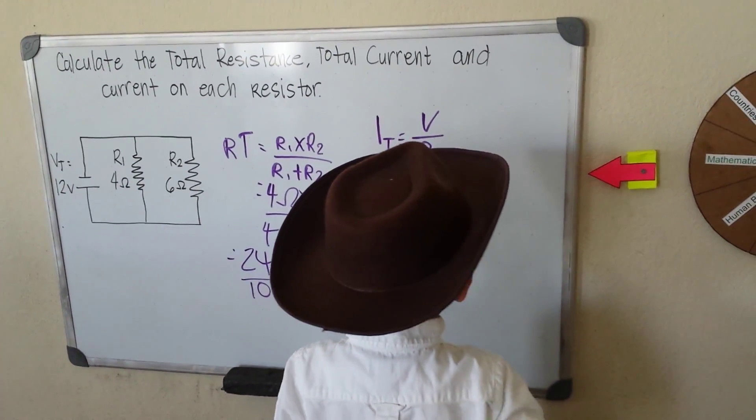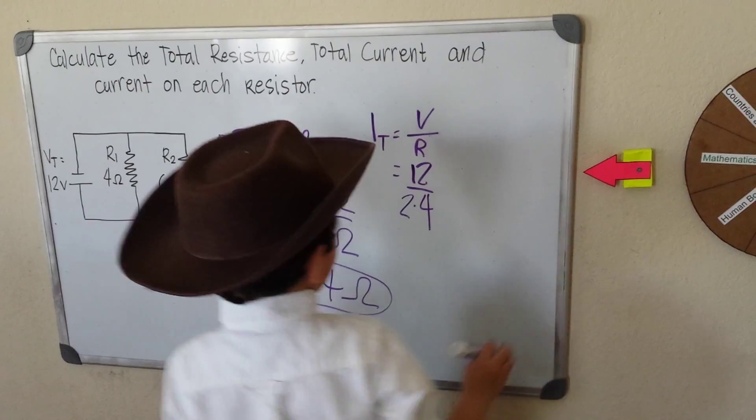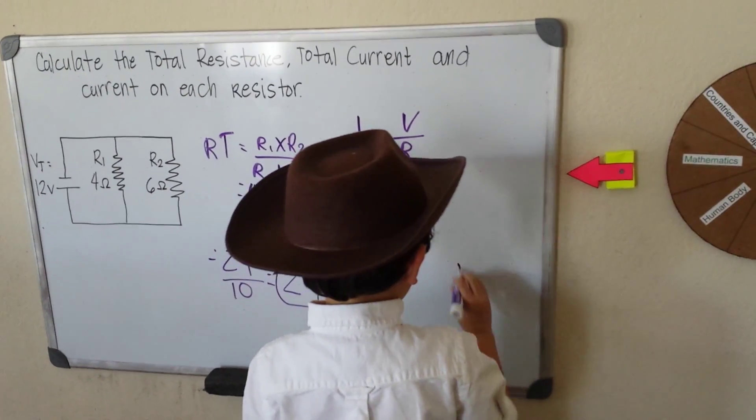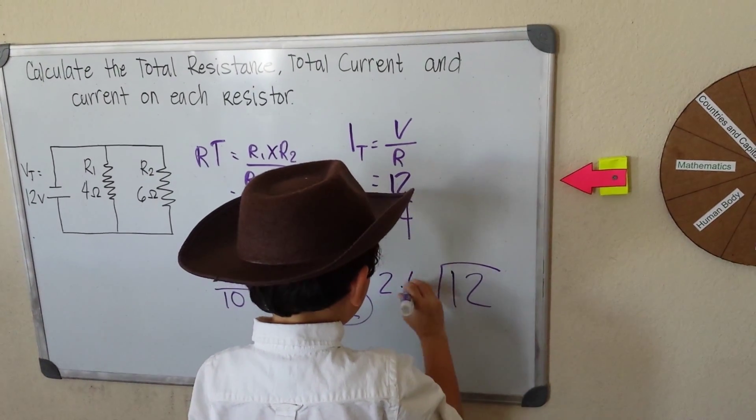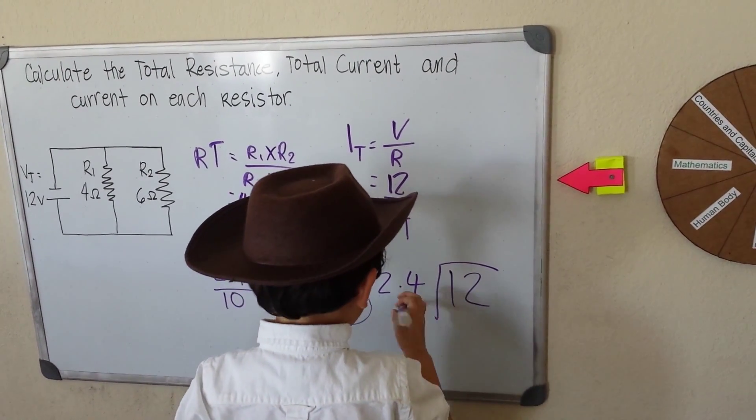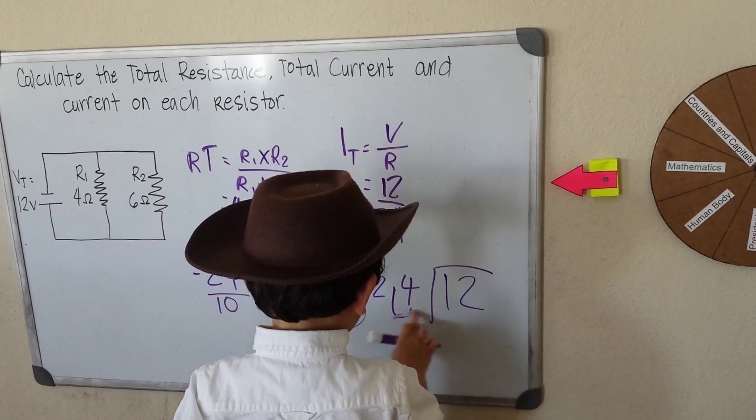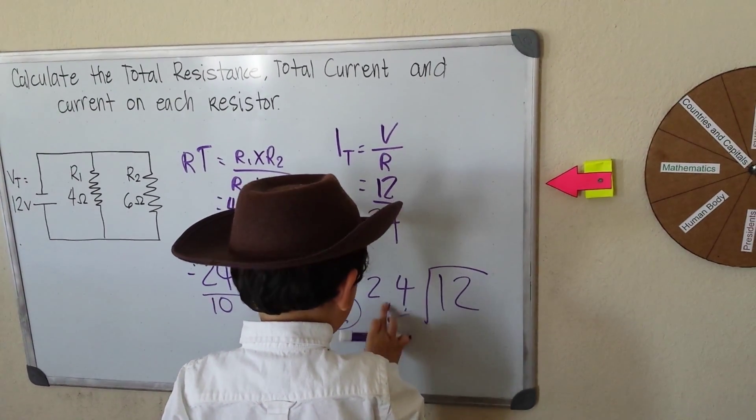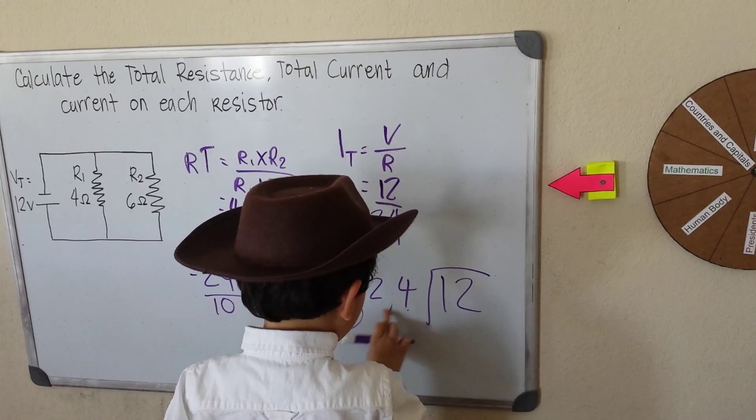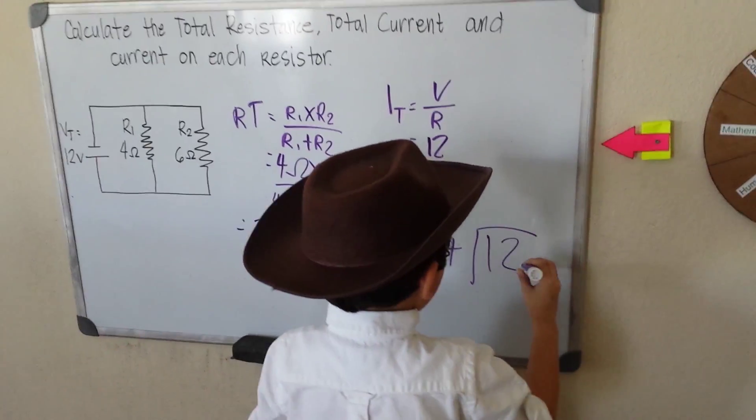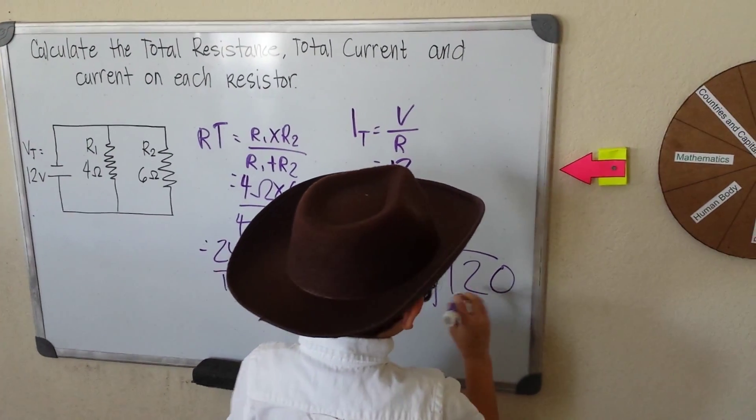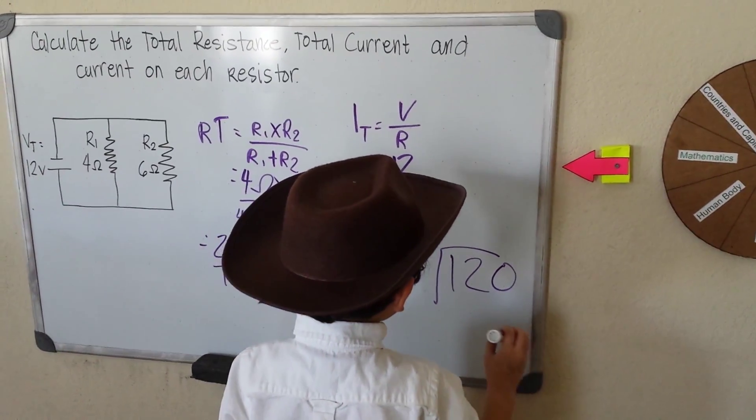Let me take this. 12 divided by 2.4. Then it goes like this, and this changes to 24. And then put a 0 at the end. 120.